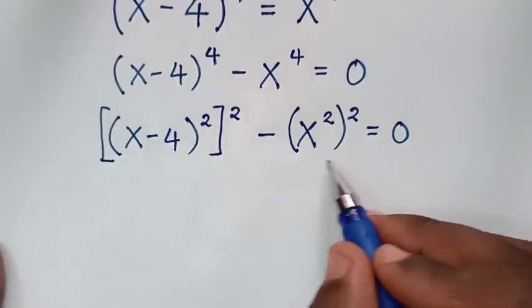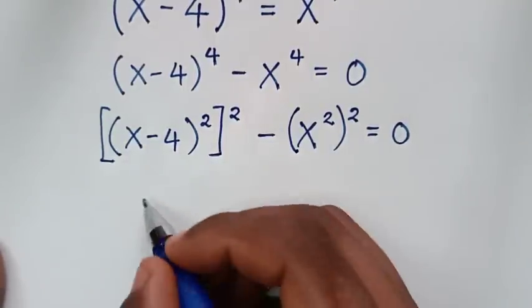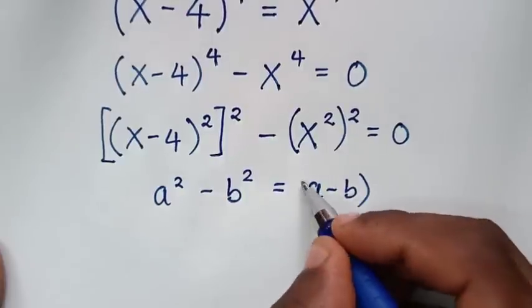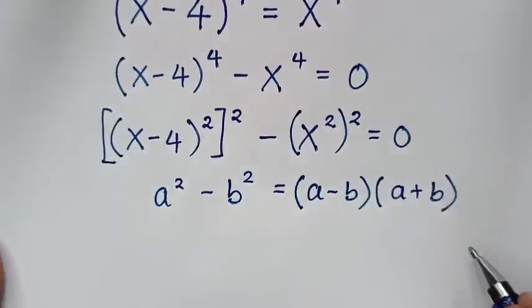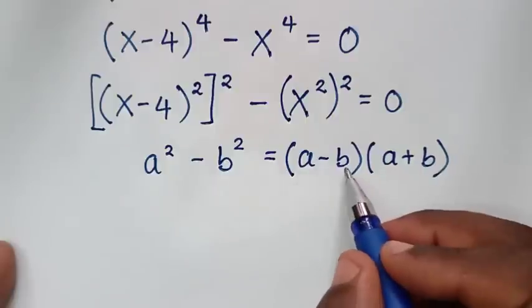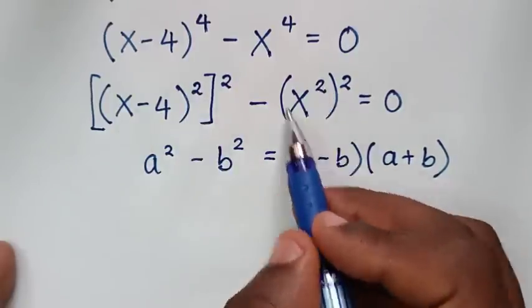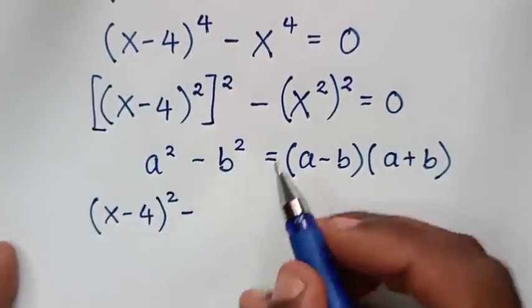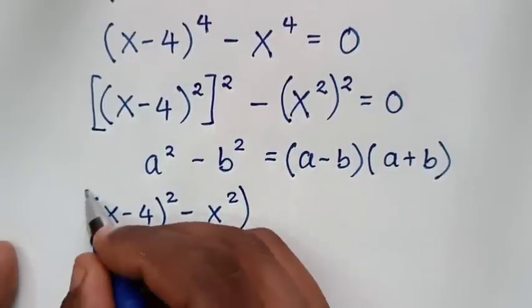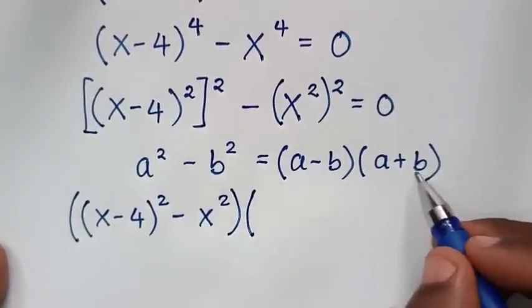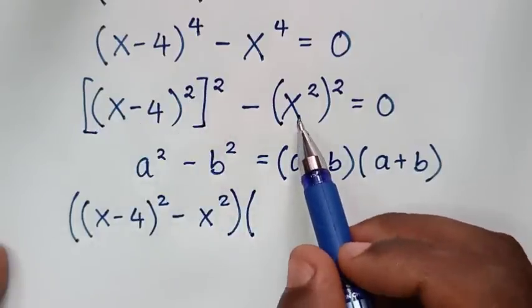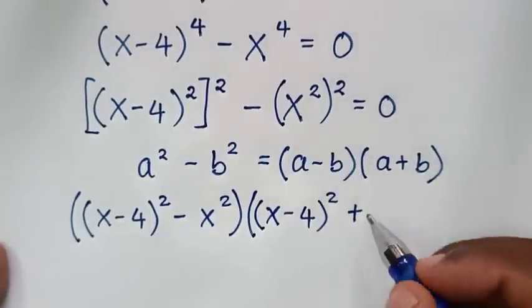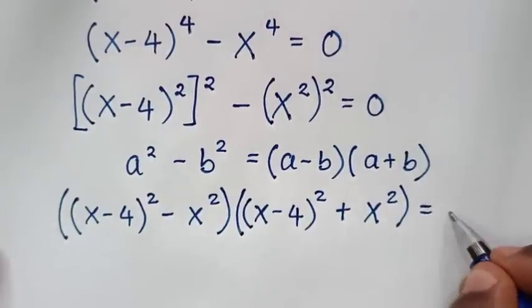Now this is in the form of a perfect square, so we apply the difference of squares rule: a² minus b² equals (a minus b)(a plus b). Applying this, it becomes [(x minus 4)² minus x²] times [(x minus 4)² plus x²] equal to 0.